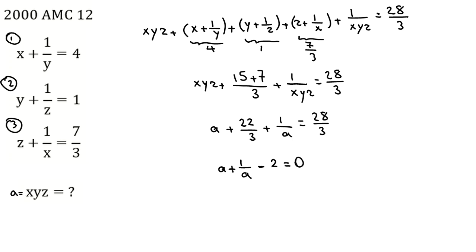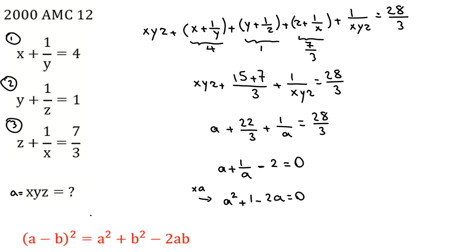We can check that a equals 1 works. To make sure it is the only answer, multiply through by a: a squared minus 2a plus 1 equals 0. Applying the perfect square identity, this is (a minus 1) squared equals 0. Since it is a perfect square, a minus 1 must equal 0, so a equals 1. We have proved that xyz equals 1 is the only answer.